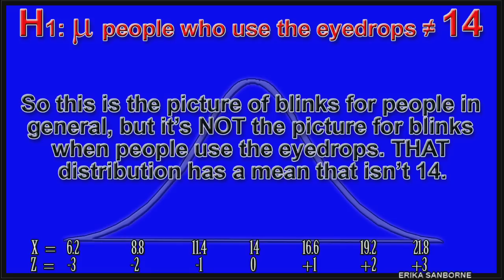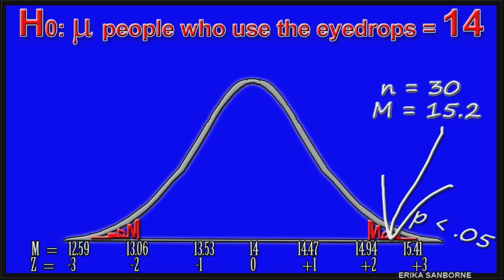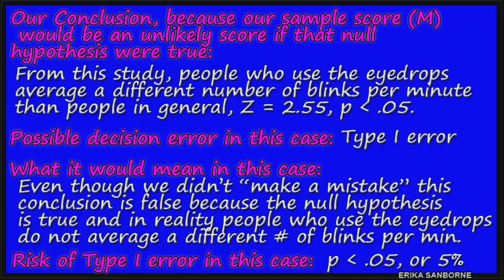This is a conclusion, a decision we've made with the information available. Sometimes, even though we did everything right, our decision is wrong. It has to do with that probability value. Remember that up to 5% of the time, a sample score will just happen to fall in the most extreme 5% of the distribution anyway, by definition. We made a conclusion here to say that people who use the eyedrops are different, but it's possible that the sample of people we gave the eyedrops to just happened to have a few weird people in it, and maybe the eyedrops don't actually make a difference on blinking in reality. It's always possible that a sample score is really just unusual by chance, and maybe we say something's different when in reality we just happened to have gotten that weird 1 out of every 20 samples. That's called a decision error, and in this situation it would be a type 1 decision error.